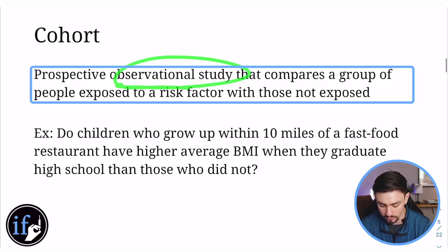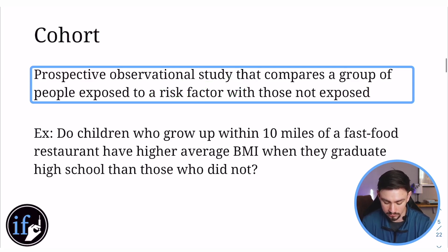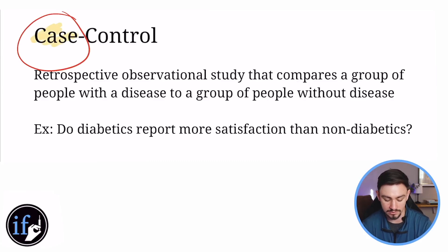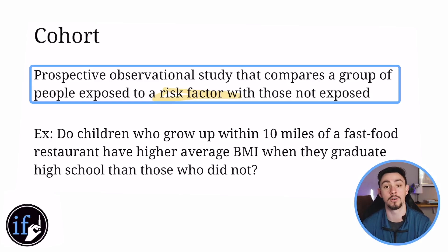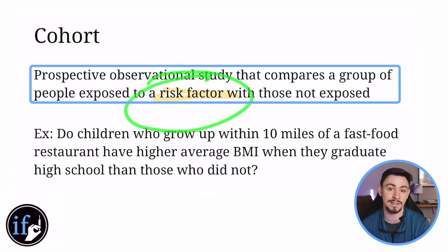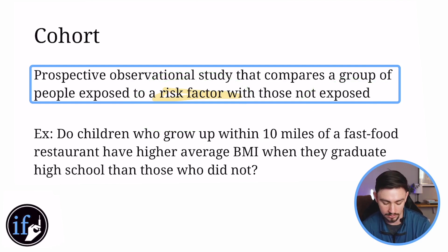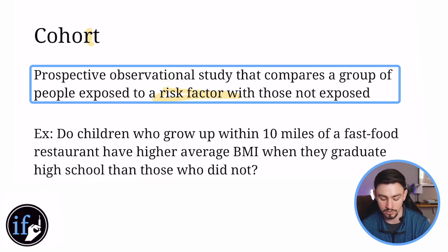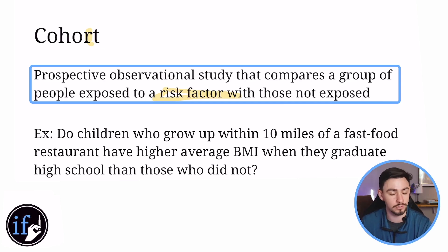Cohort study is a prospective observational study — prospective means looking into the future — where we watch participants without experimenting on them, comparing a group exposed to a risk factor versus those not exposed. Whereas case control deals with the disease, cohort deals with a risk factor. The letter R in 'cohort' reminds me it's about a risk factor. For example, comparing those who smoke cigarettes versus those who don't is cohort; comparing those with lung cancer versus those who don't is case control.